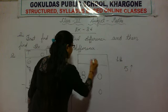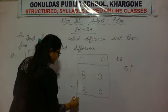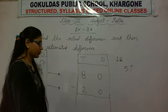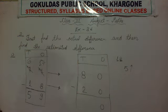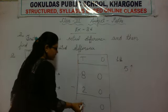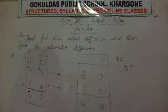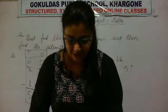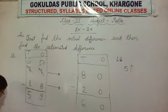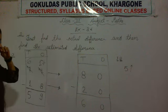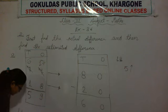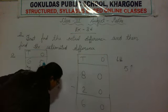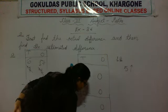If we subtract the rounded off values, then we will get the estimated difference. So 0 minus 0 is 0, and 8 minus 2 is 6. So the estimated difference is 60. We subtracted the actual numbers and got the actual difference, then rounded off the given numbers, subtracted them, and got the estimated difference. Actual difference is 59 and estimated difference is 60.